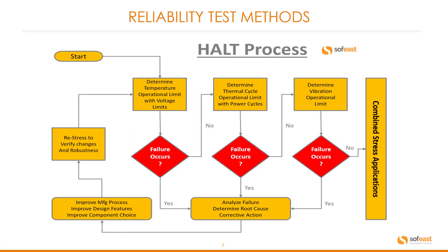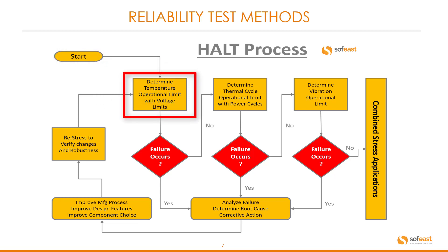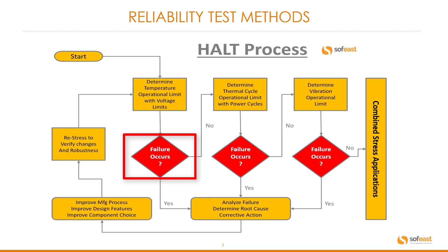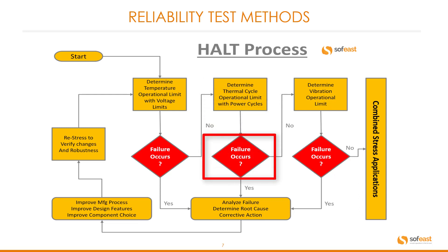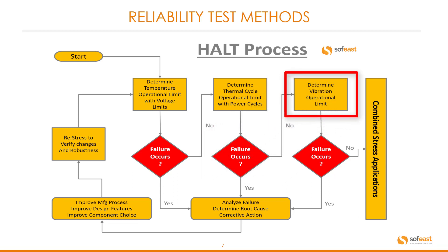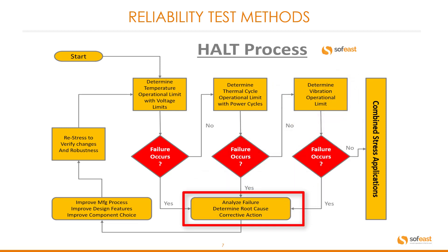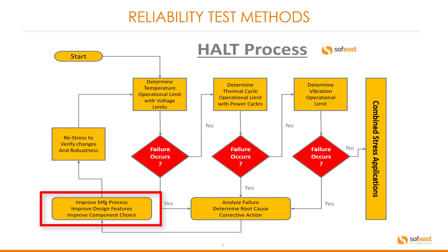This is a typical flow process for the HALT process. We can see at the top the start, dropping down into the first test cycle looking at temperature operation limits with voltage limits. At the decision point, if failure does not occur, it drops into the next test cycle — the thermal cycle. If it does not fail there, it completes the cycle with a vibration test. However, if at any point during these tests a failure does occur, it leads to the requirement to analyze the root cause, then moving into manufacturing process improvements, design feature improvements, improved component choice, and so on, before coming back through the complete cycle until everything has passed.